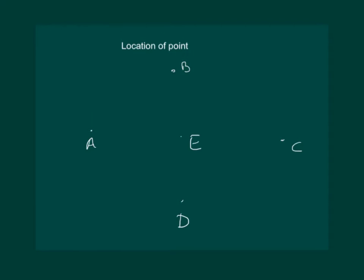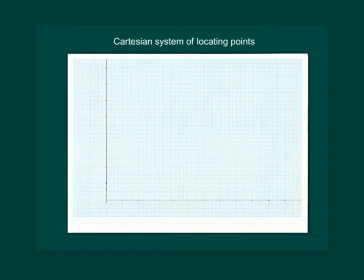We shall use a graph paper to do so and use Cartesian system of locating the points. Fixing a point with the help of two measurements, a vertical line and a horizontal line, came to be known as Cartesian system of locating points. In this system we mark horizontal line as x-axis and the vertical line as y-axis and mark the point of their joining as the origin.